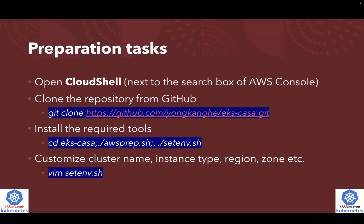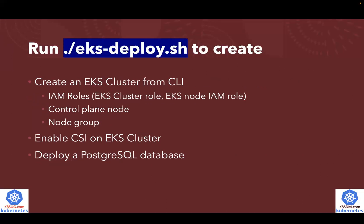So there are a little bit of preparation tasks. First of all, you log into the AWS console and open Cloud Shell. The second step is you're going to clone the repository from my GitHub page and then run the install for the required tools before you can customize some of the config like instance type, region, or zone. But it's optional — you don't have to customize these. Once you are ready, basically you just run EKS-deploy.sh.